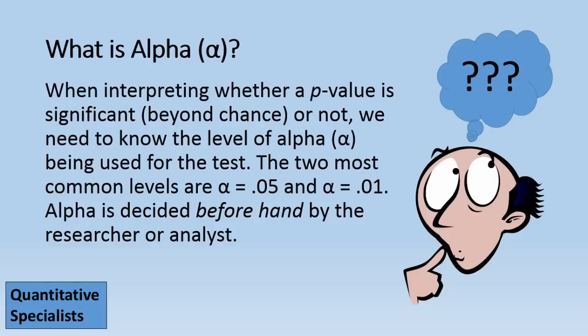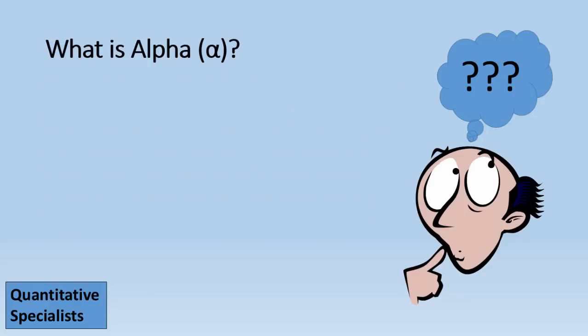The two most common levels are .05 for alpha or .01. Alpha is decided beforehand by the researcher or analyst. So if we use an alpha of .05, the following rule applies.